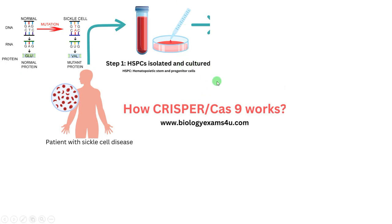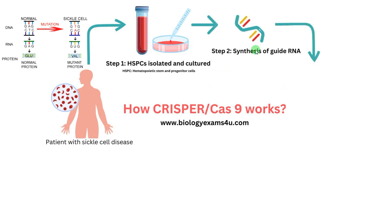Now we are entering into the CRISPR-Cas9 gene editing procedure. First, Step 2 is synthesis of guide RNA. Guide RNA is simply an RNA that is complementary to the target DNA sequence. Here it is the sequence CTC — that sequence should be edited. So the guide RNA will be complementary to that target sequence.